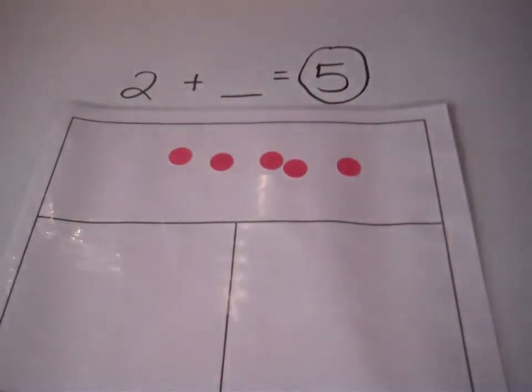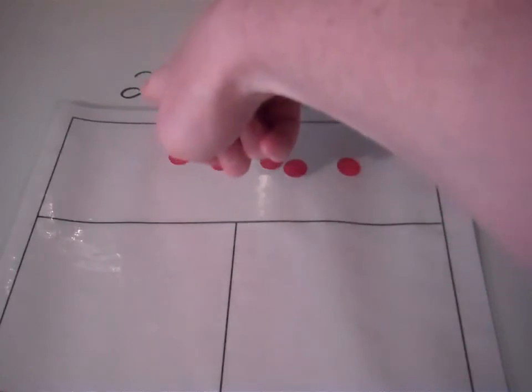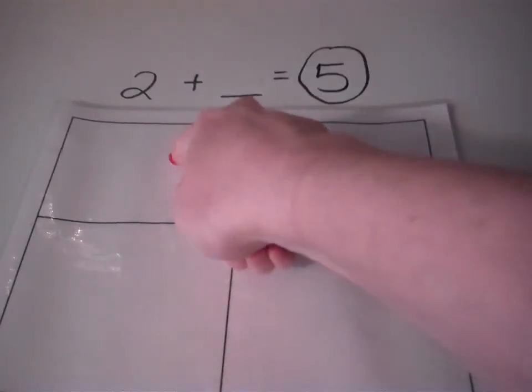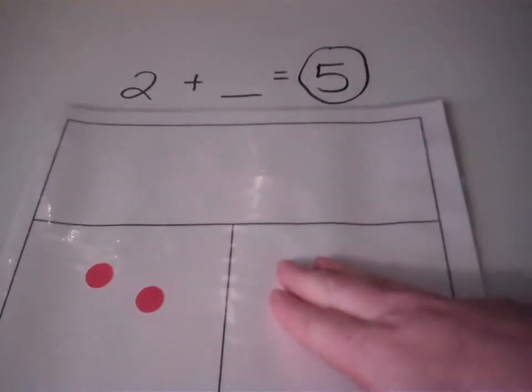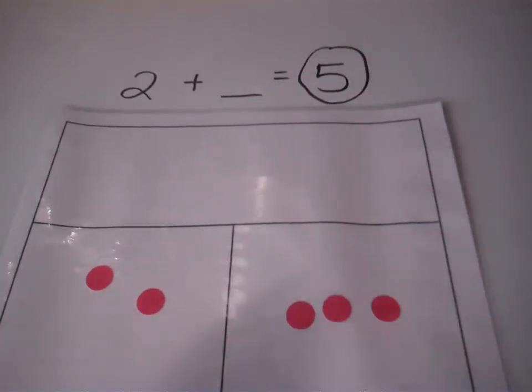The next part of the song goes, slide down what you know to see what's left. So they do that. We know that there's 2 in our equation, so we slide down what we know, and then we see what's left, and that's our missing number. So we slide down what we know to see what's left. 3's left, so our answer is 3.